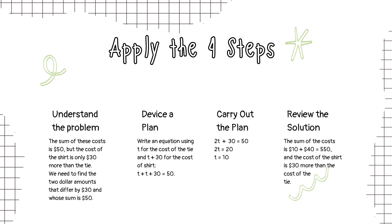So, understand the problem. The sum of their costs is $50, but the cost of the shirt is $30 more than the tie. We need to find the 2 amounts that differ by $30 and whose sum is $50.